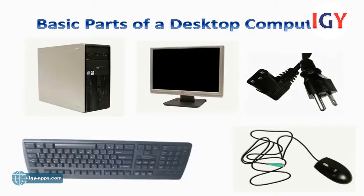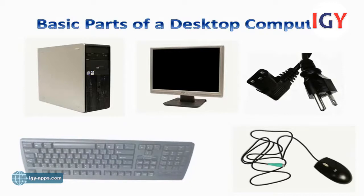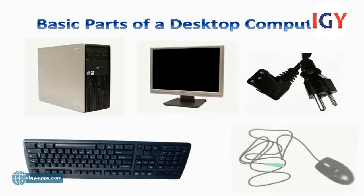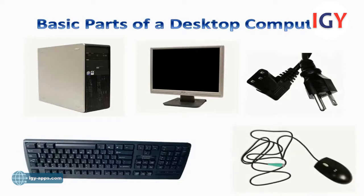Keyboard. The keyboard is one of the primary ways we use to communicate with the computer and enter data. Mouse. The mouse is known as a pointing device. It lets you point to objects on the screen, click on them, and move them.